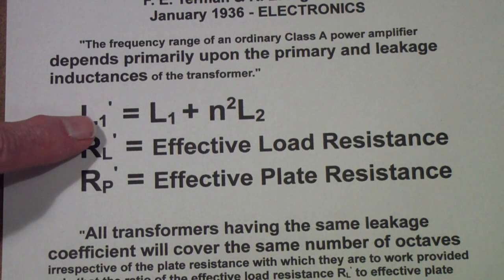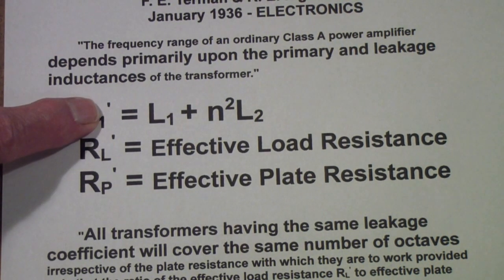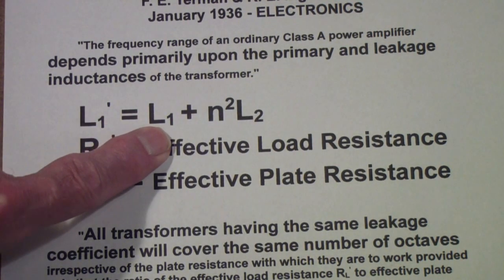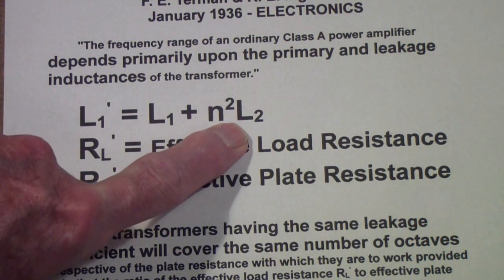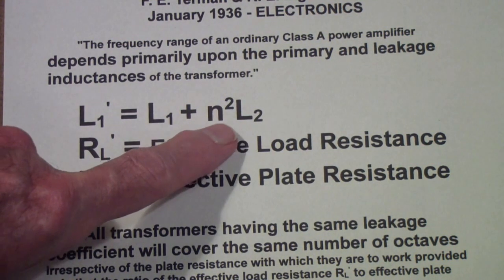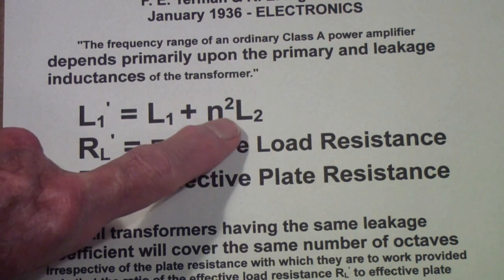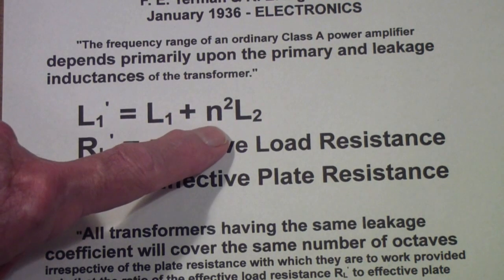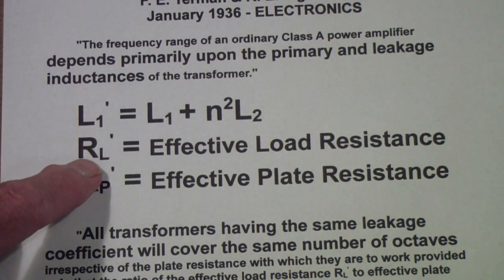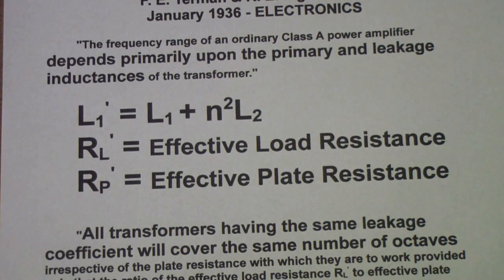One is called L1 prime, which is the combination of the inductance of the primary and the reflected impedance of the secondary. Reflected by multiplying by n squared, where n is the turns ratio. The second thing is the effective load resistance, and that is what you see looking into the transformer. And the third thing is the effective plate resistance of the tube.